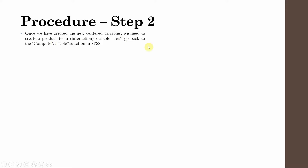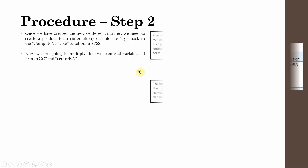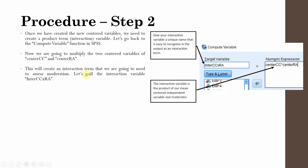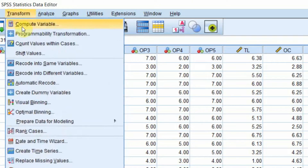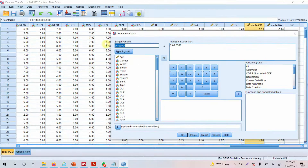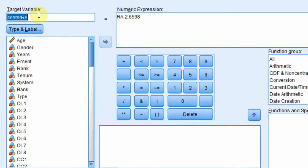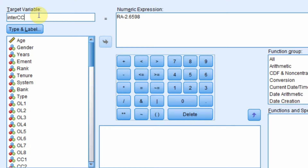we need to create the product term of the centered variables. How do we create the product terms? Simply go to Transform, Compute Variable, and we are going to name it the interaction term — inter CC into RA. You multiply the centered variables, not the original variables. Go to Transform, Compute Variable, and create the interaction term inter CC into RA.